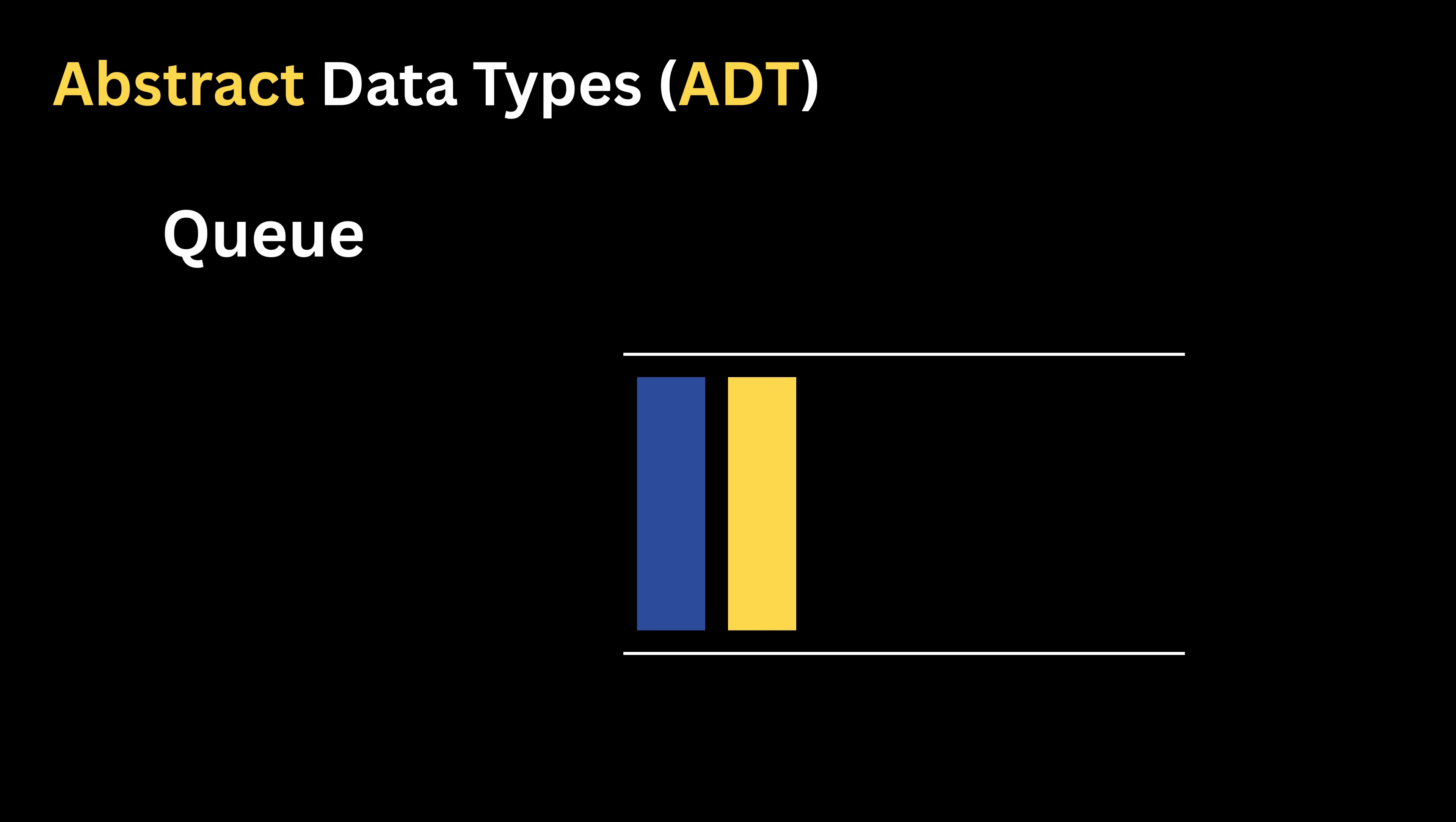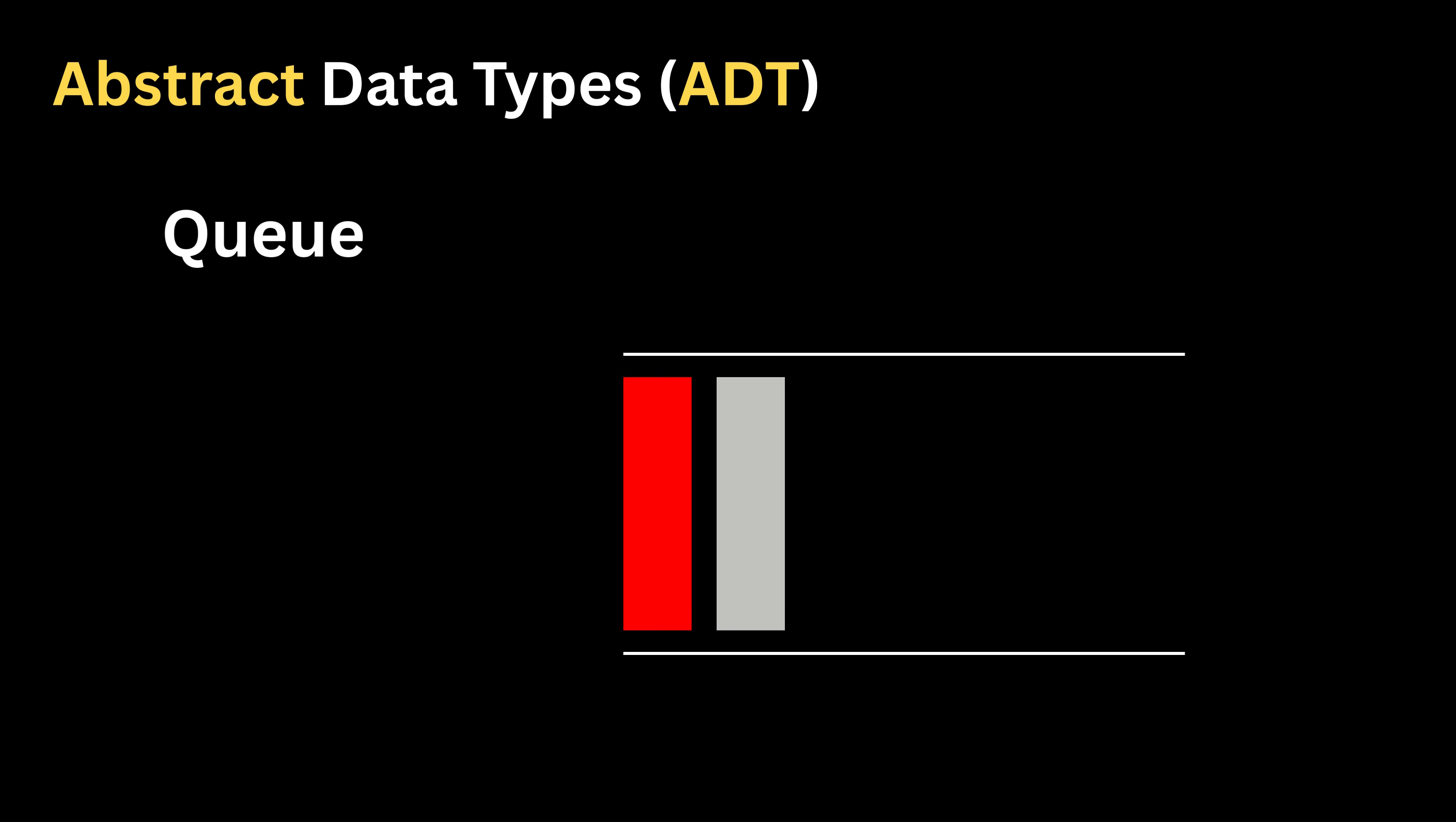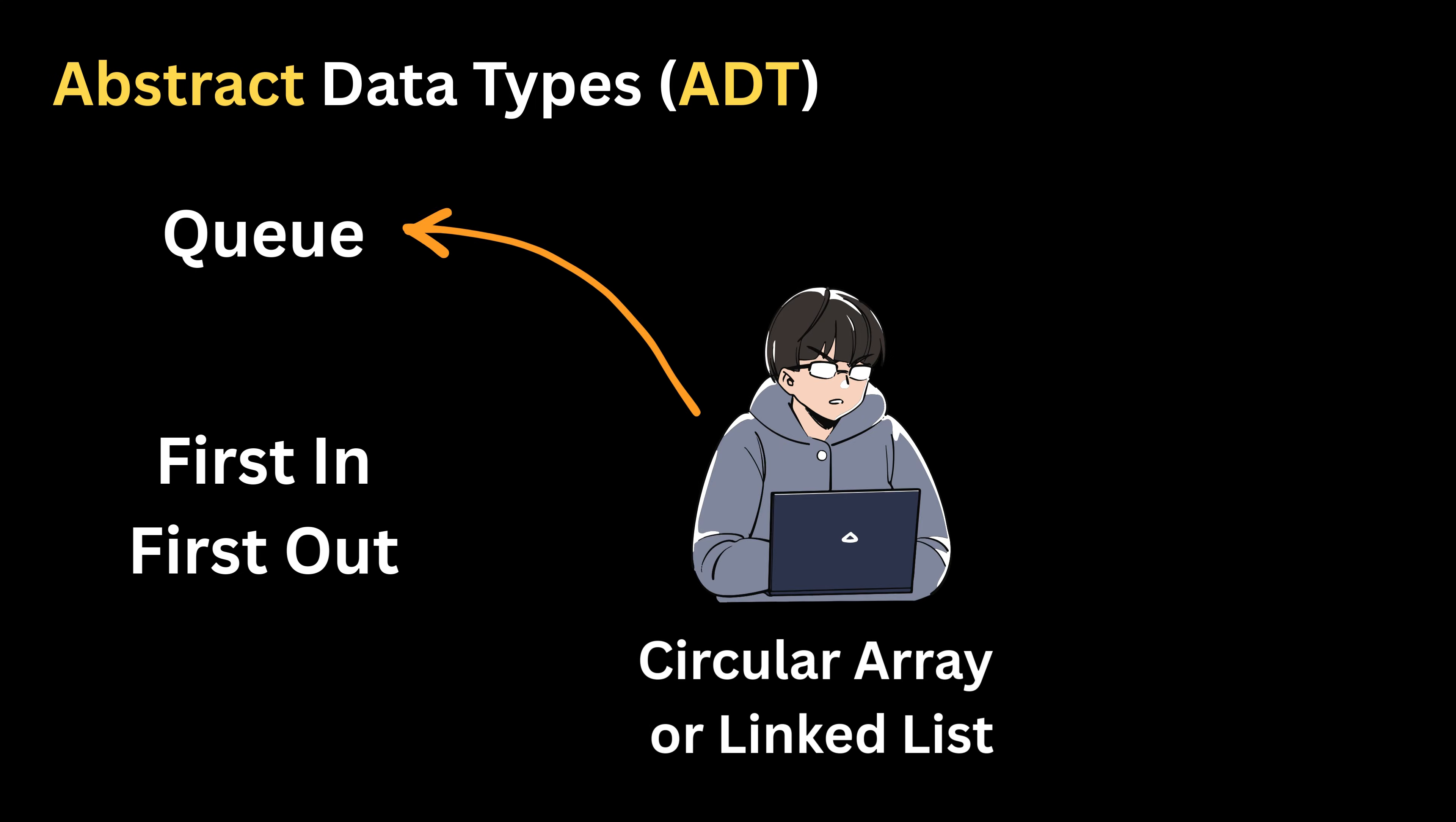The same idea applies to a queue, which is also an abstract data type where items are added at the back and removed from the front. It follows the rule first in, first out, meaning the first item you place is the first one you take out. Whether the queue is made using a circular array or a set of connected nodes does not matter. All that matters is that the behavior remains the same, first in, first out.